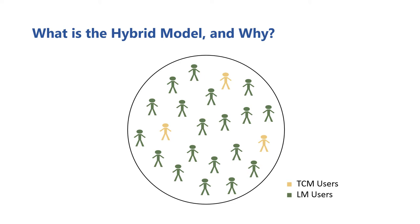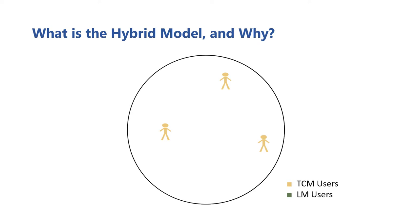The intuition for why the hybrid model may be able to improve utility comes directly from the practical choice of which classic trust model to use when no hybrid model exists. Without a hybrid model, if the trusted curator model is chosen, then in order to not violate any user's trust preferences, only the small amount of data from the trusting users who opted in could be used.